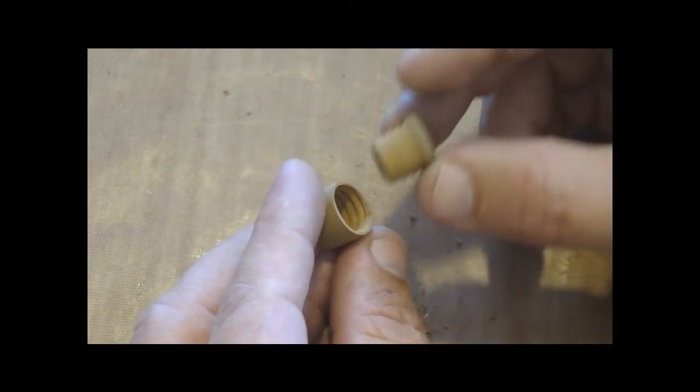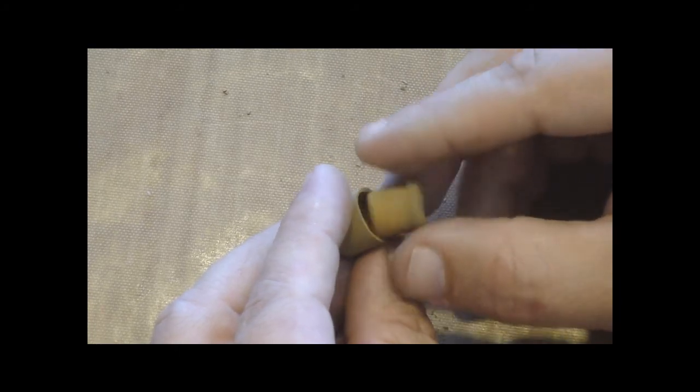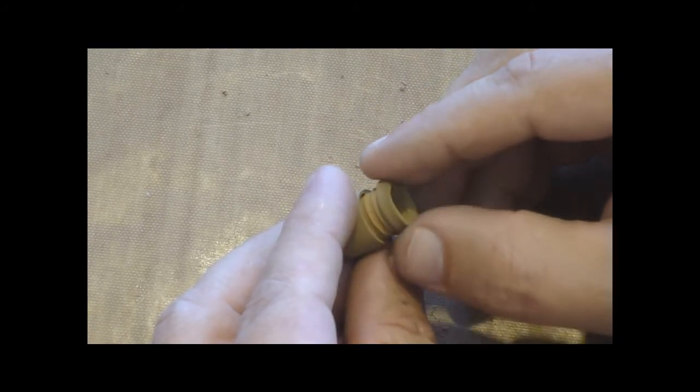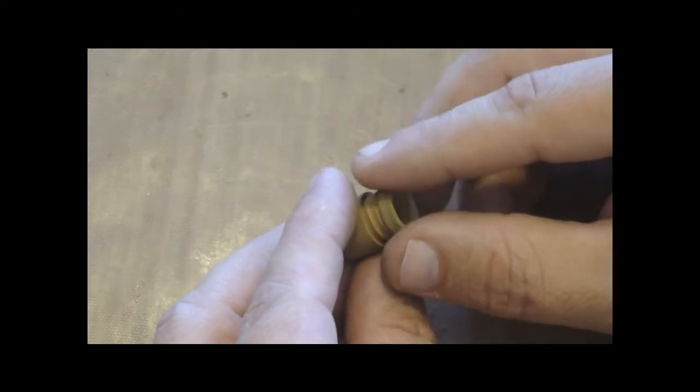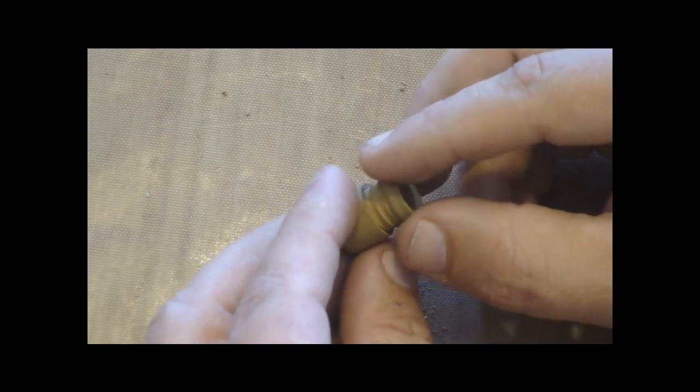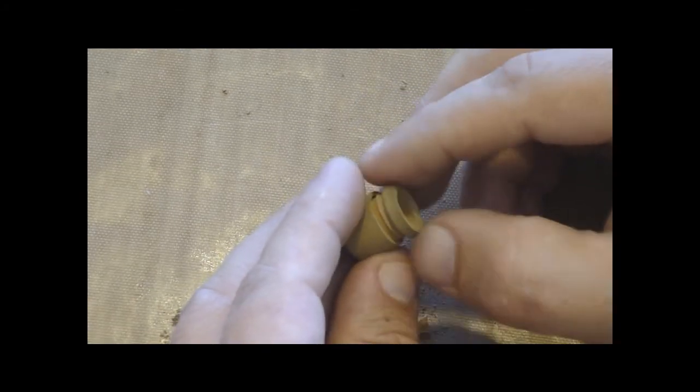So once your pieces are dry, you have to basically mate them together. To do that, you're going to screw them in slowly but surely. Each time you find resistance, you work it a little bit, you blow out the dust and you work it until your threads are all mated together.